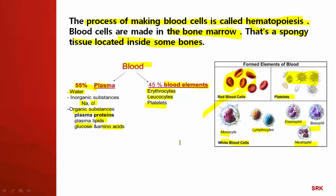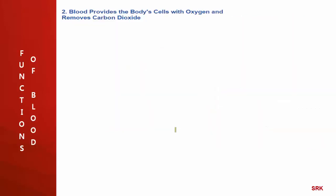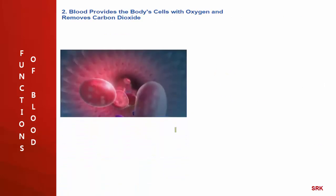White blood cells provide defense. These are the functions carried out by cells present in the blood. The cells present in the blood are also known as formed elements: RBCs, platelets, and WBCs. What are the functions of blood?